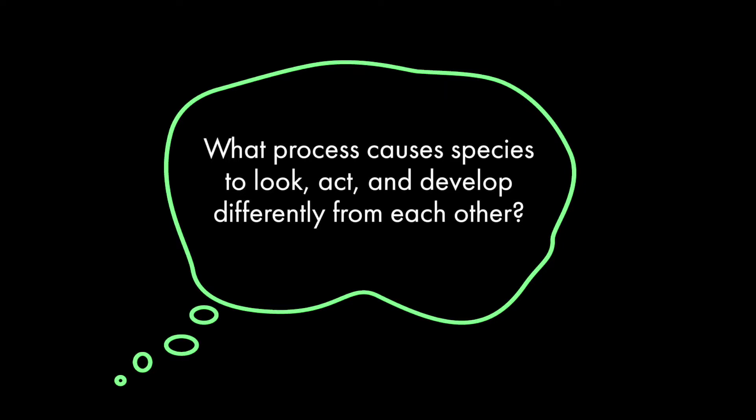So why are there so many different types of frogs? Why is there such diversity in color, shape, size, behavior, and development? The process that causes species to look, act, and develop differently from each other is evolution through natural selection. The different features we discussed, which you might have heard called adaptations, arise because of natural selection.